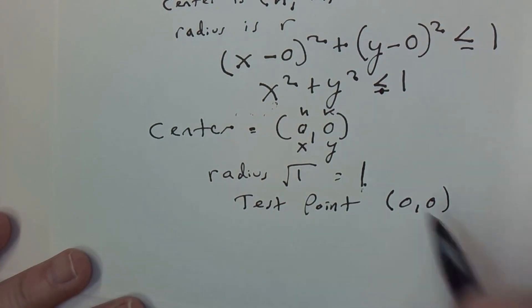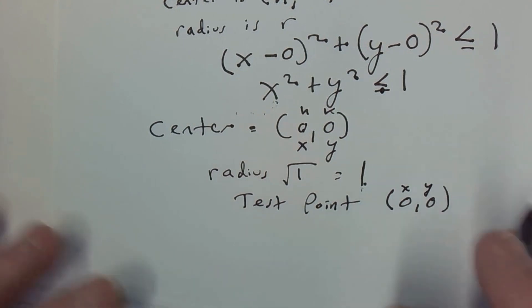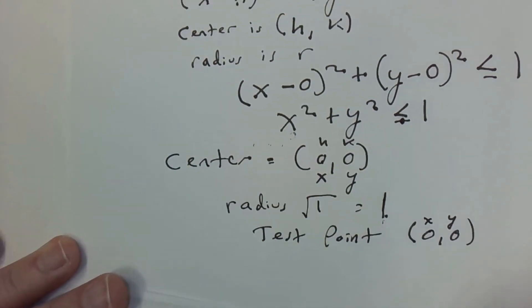And so we're going to take our test point. Of course, this is our x and our y. Again, I could pick any point. I pick those two. And I'm going to feed it back into our equation.